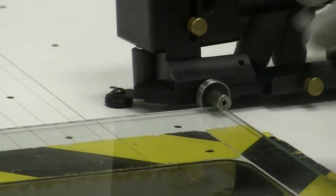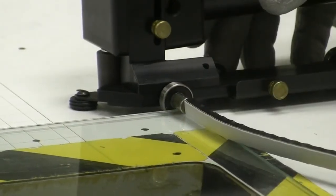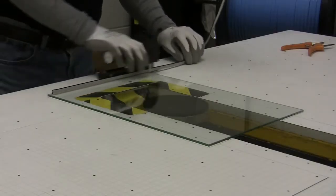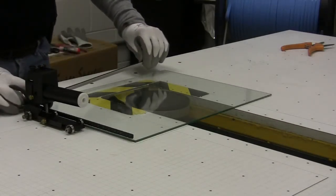The first step in spacer application is to place the first pass of sealant in the proper location. Use the gas fill start point on the hand tool. This indicator will place the start point of the spacer about 465 thousandths of an inch from the glass edge.